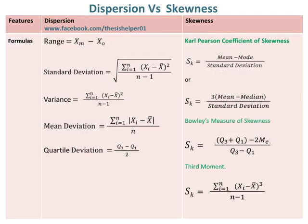The formulas of dispersion regarding range, standard deviation, variance, mean deviation, and quartile deviation are given for help, whereas the formulas of skewness regarding Karl Pearson's coefficient of skewness, Bowley's measure of skewness, and the third moment are also given for help. Thus, you can compare the formulas of dispersion and skewness.